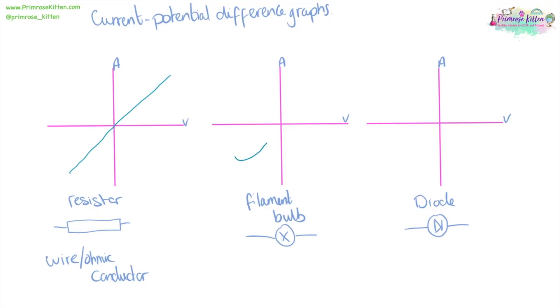For a filament bulb, we have our graph going through zero looking like this. This is because as the temperature increases, the resistance increases.